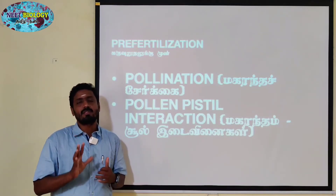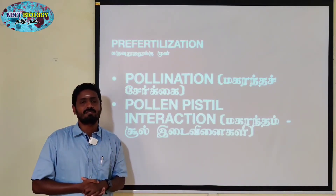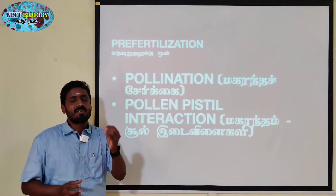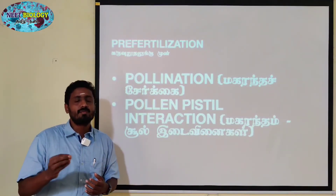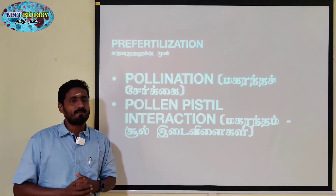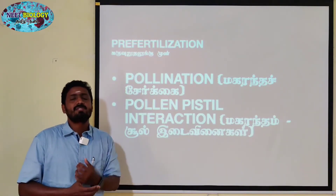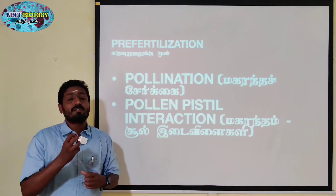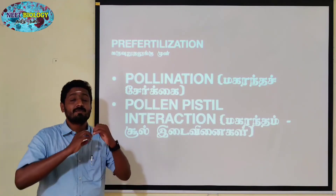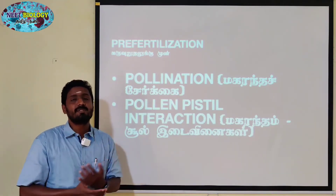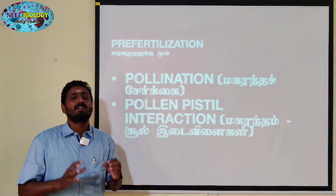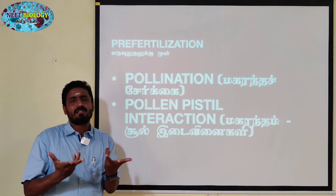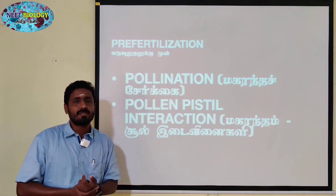When the pollen tube reaches the embryo sac, the fertilization process begins. In pollen-pistil interaction, if it is the same species, the stigma will accept the pollen grains. If it is a different species, the pollen grains will not be accepted — they will be rejected and will not germinate.